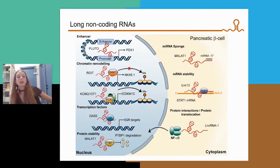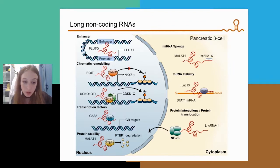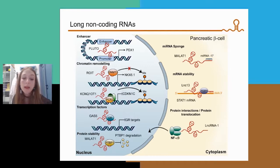Long non-coding RNAs can be expressed in the nucleus or the cytoplasm, and they regulate the expression of target genes through very different mechanisms. In the nucleus, they can act by creating DNA loops and promoting interaction between enhancer and promoter regions, interact with chromatin remodeling proteins, or act as decoys or scaffolds for transcription factors. In the cytoplasm, they can act as microRNA sponges, affect mRNA stability, or modulate protein interactions and subcellular localization.